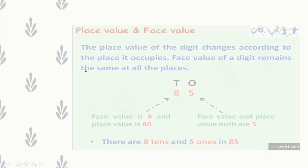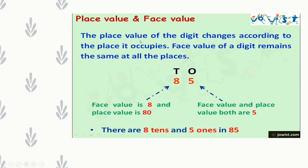Place value and face value. The place value of a digit changes according to the place it occupies. Face value of a digit remains the same at all places. The place value of a digit depends on where it is, whereas the face value of a digit will never change — it will be the same in whatever place it may be.